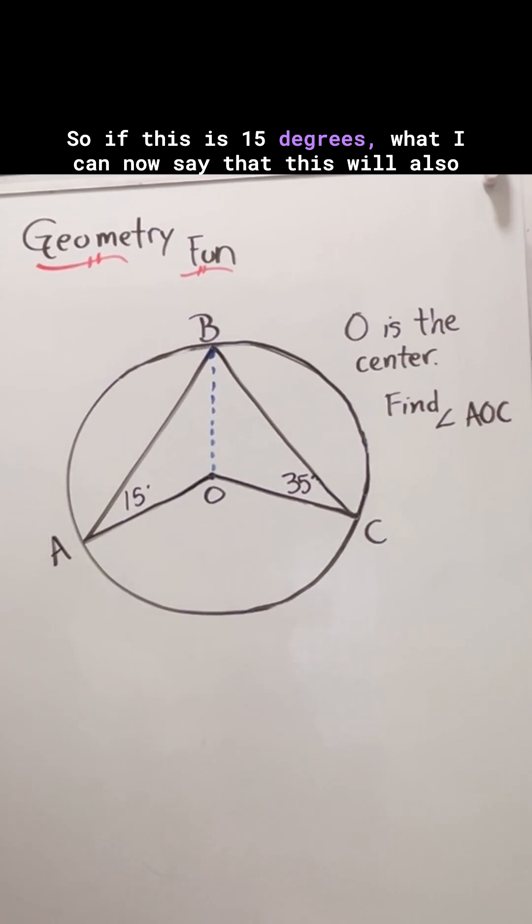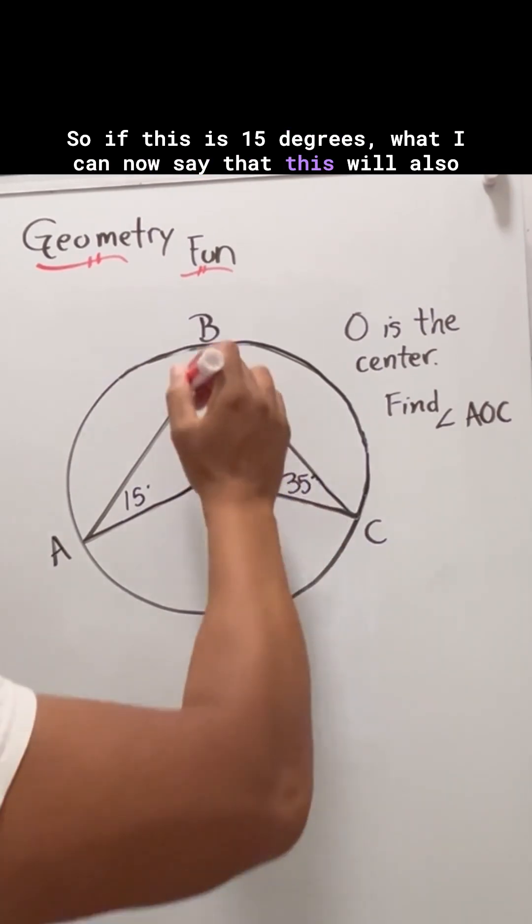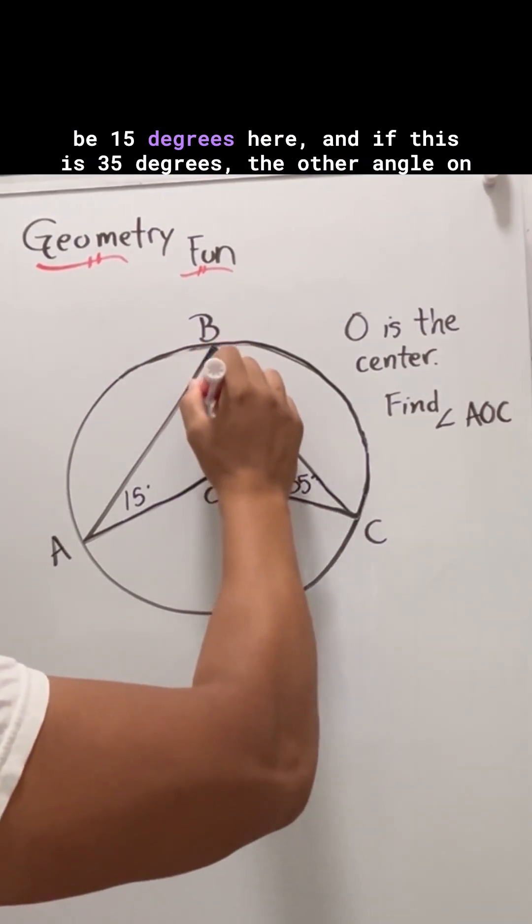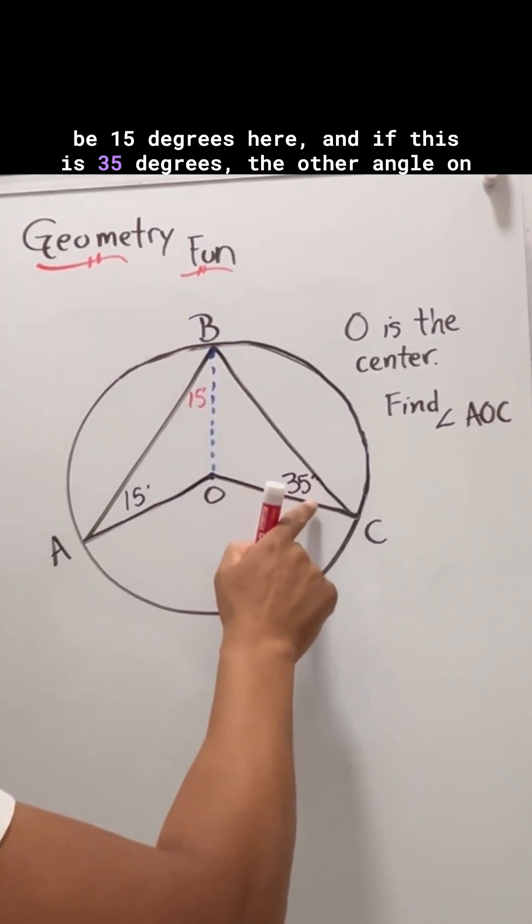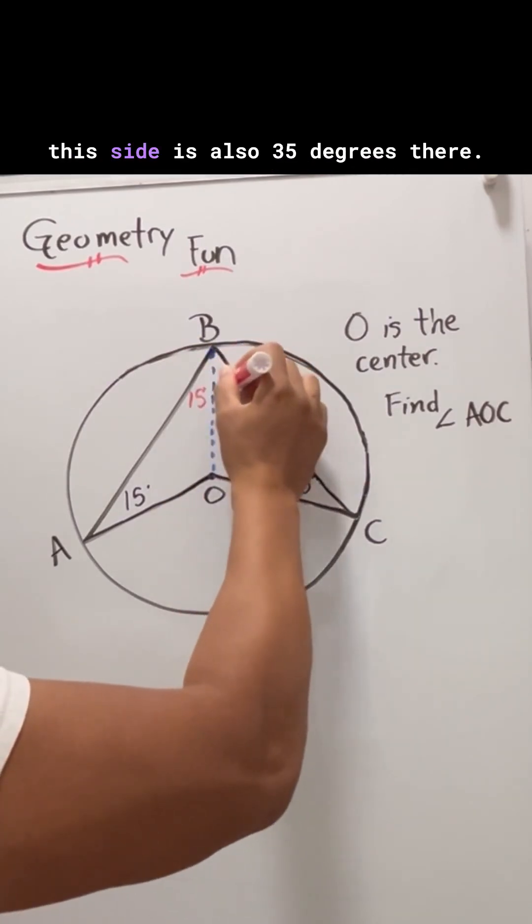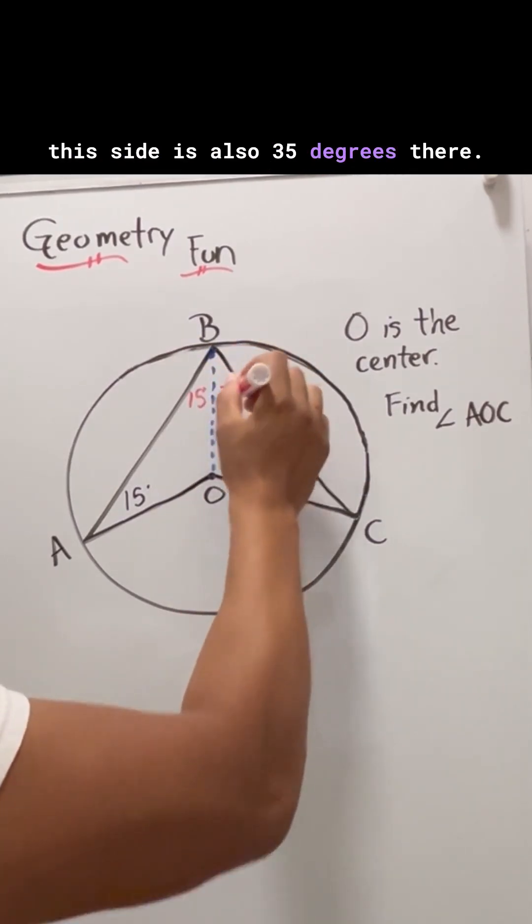So if this is 15 degrees, this will also be 15 degrees here. And if this is 35 degrees, the other angle on this side is also 35 degrees there.